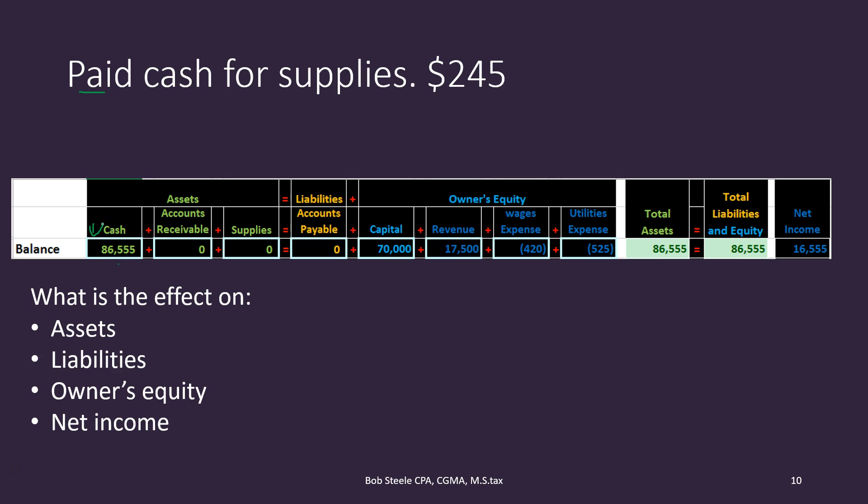What's the other side of the transaction? It's going to be supplies. Supplies is also in the assets section. Now you might be thinking: shouldn't supplies be an expense? Why aren't we expensing supplies?